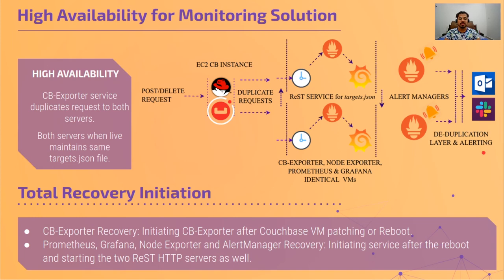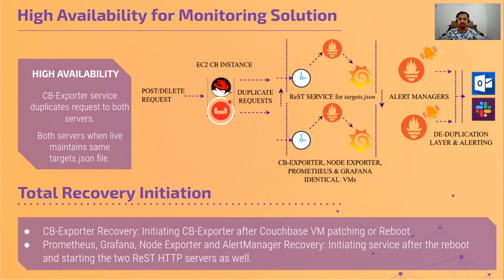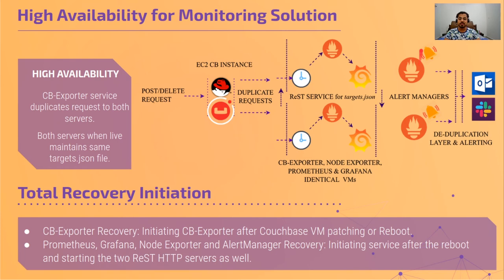Alerts can be sent to the necessary group deals or teams to take necessary action. The total recovery process is a rather simple implementation — a bash script runs whenever the VM reboots. It references the target.json file for Couchbase exporter, restarts all Couchbase exporter instances from scratch, then starts Prometheus, Grafana, node exporter, and alert manager accordingly. This concludes our discussion on high availability and total recovery.